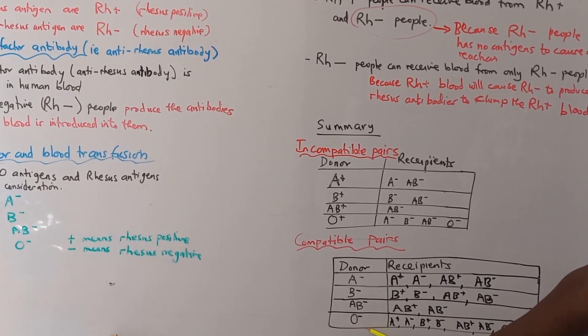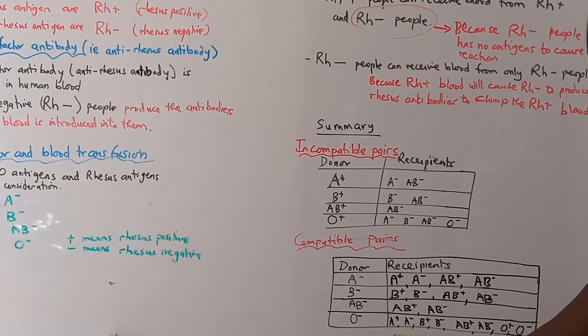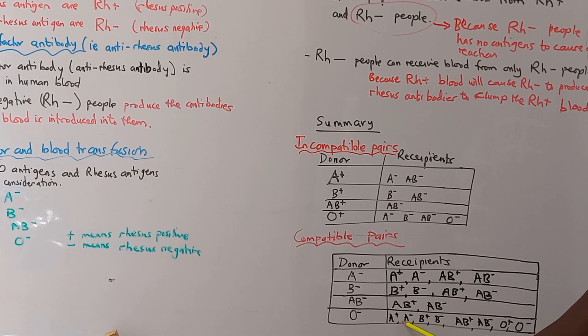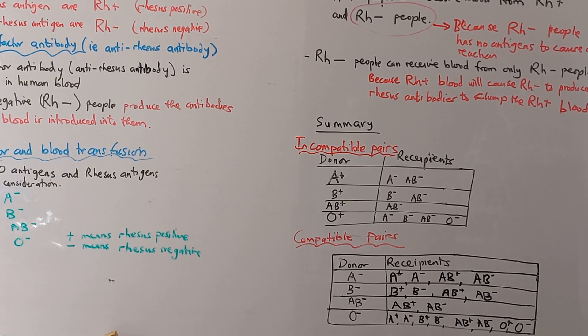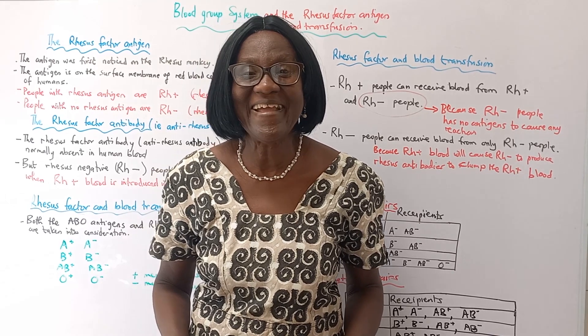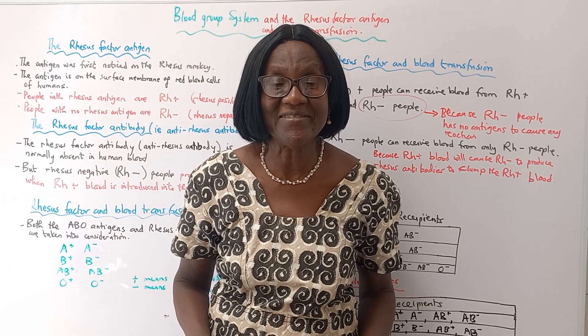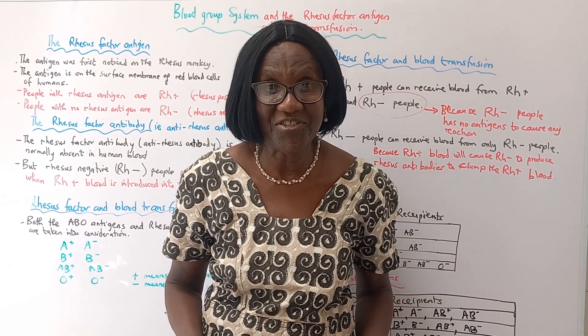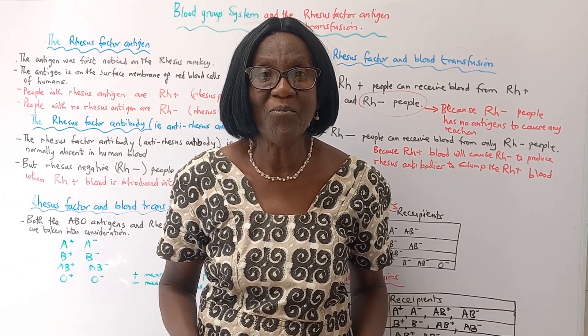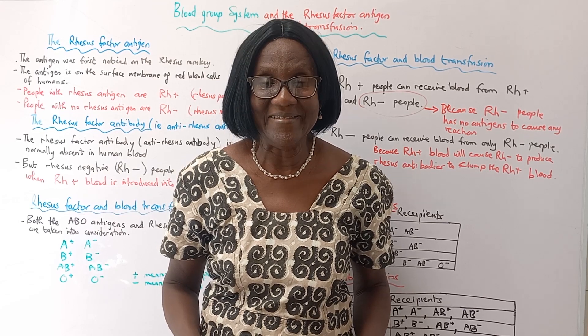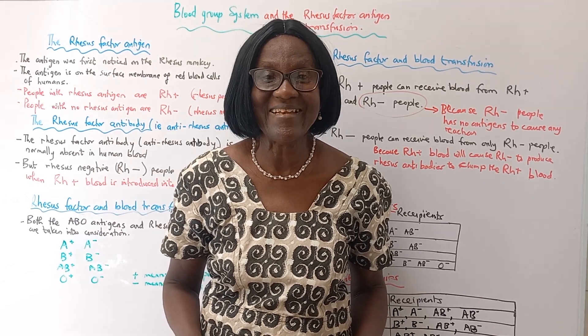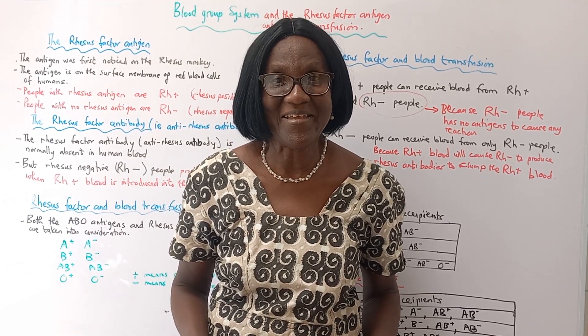Blood group O negative is really a universal donor, can give blood to every blood group type. This brings us to the end of our lesson today. In our next lesson, we'll look at the Rhesus factor antigen and marriage and newborn hemolytic diseases. So we'll meet in our next lesson. Goodbye and thank you.